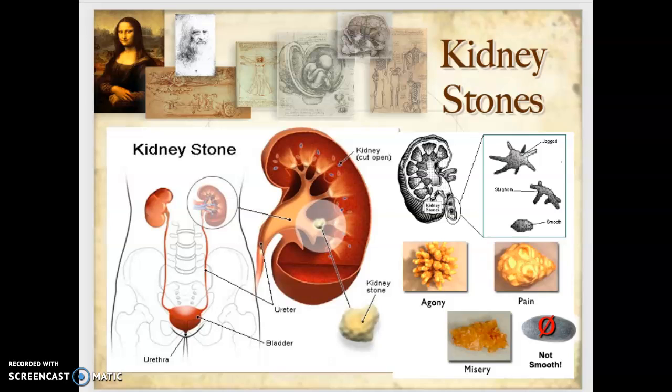This is the second part of our urinary elimination lecture and we're going to start with kidney stones. When we think about stones, I don't want you to picture smooth polished pebbles from the ocean. I want you to think of real jagged, sharp rocks — it will help you make sense of the pathophysiology and the pain that this person is going to experience.